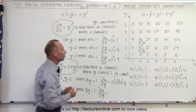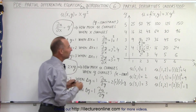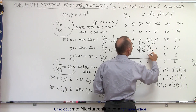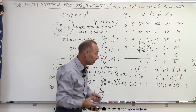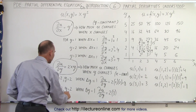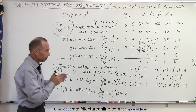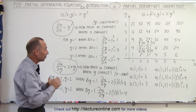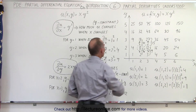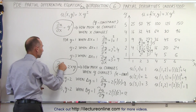What about x equals 3 and y equals 2, where the function value is 12? If we go up by 1 in y, we go from 12 to 27, a change of 15. If we go down by 1 in y, we go from 12 to 3, a change of 9. The average change is (9 + 15) / 2 = 12. Plugging into 2xy: 2 times 3 times 2 = 12. Again, it bears out perfectly.